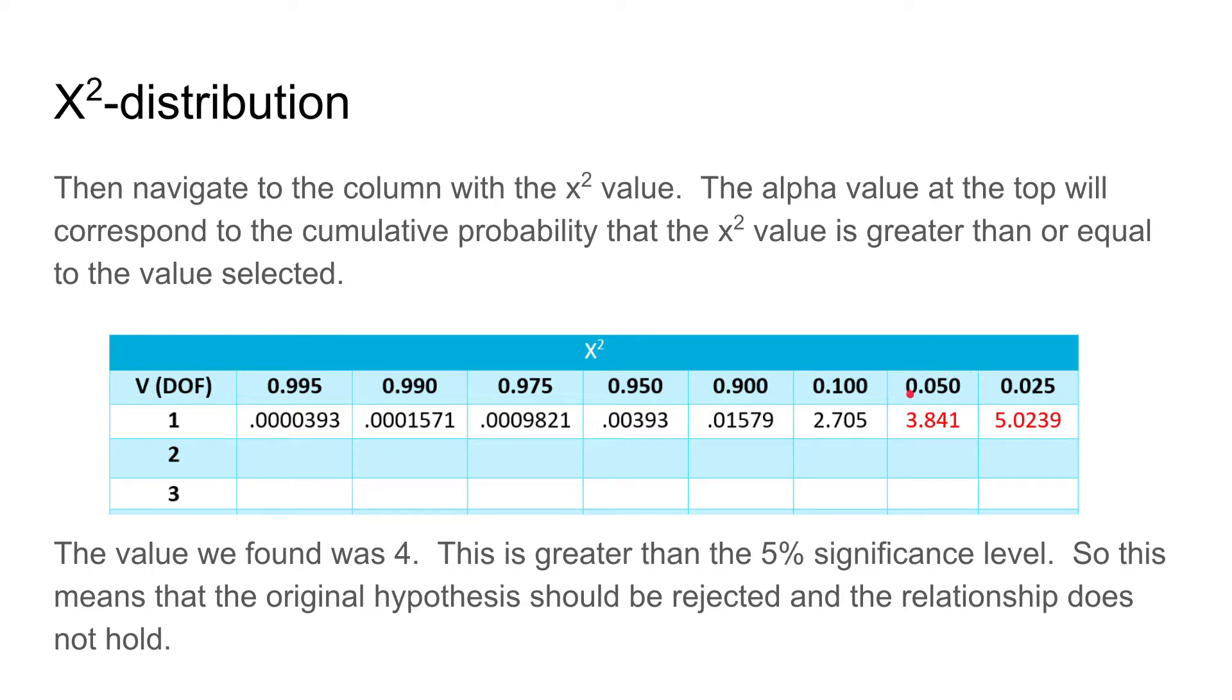It corresponds to a 0.05 and 0.025 significance level. The values at the top are called the significance levels. Typically, in these situations, you want to ensure that you have greater than a 5% significance level.